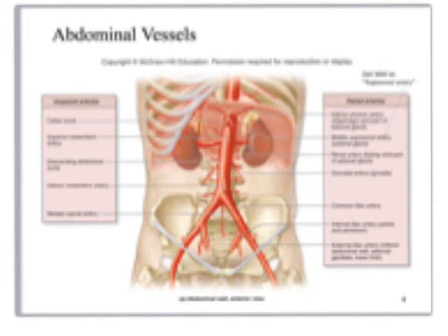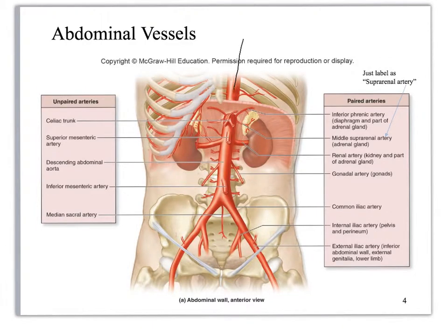In the last unit, we were looking at the blood vessels of the upper body, so we're continuing on with that pathway with our arteries. Here you see that descending aorta, and then once you transition into the abdominal cavity, we can start calling it the abdominal aorta. You don't have to combine those terms — it's a little bit more specific if you do, but it's optional.